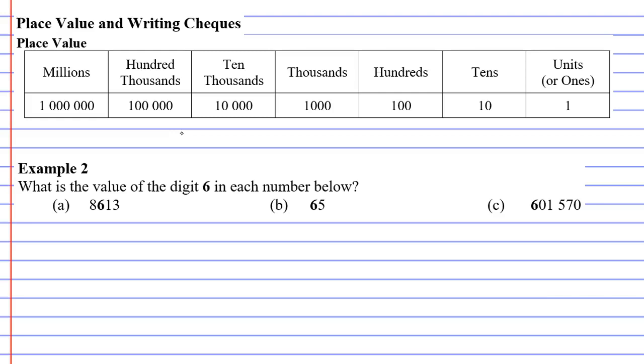Now, looking at question A, it's 8,613. What is the value of the 6? And what we need to remember is that it's not just 6. A good way of looking at it is to take that number and put it in the appropriate column in the table above. So the 3 goes in the units column, the 1 goes in the tens column, the 6 in the hundreds, and the 8 in the thousands column.